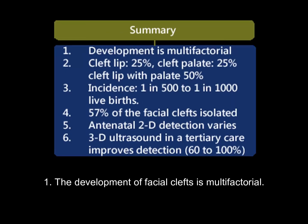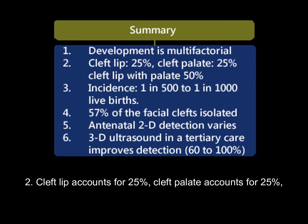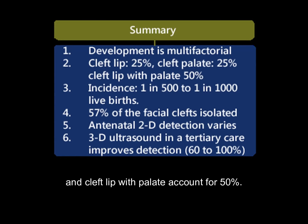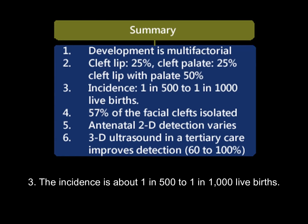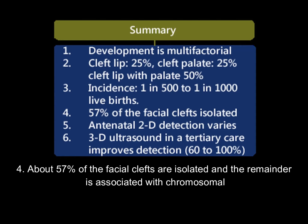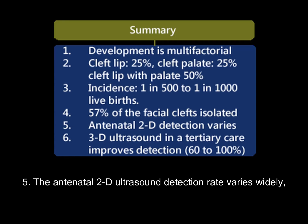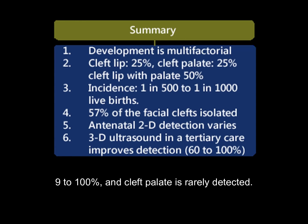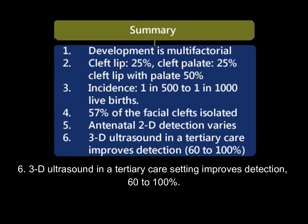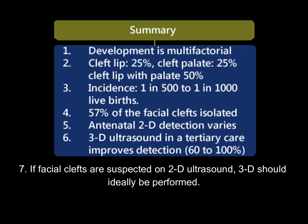To summarize: (1) The development of facial clefts is multifactorial. (2) Cleft lip accounts for 25%, cleft palate for 25%, and cleft lip with palate for 50%. (3) The incidence is about 1 in 500 to 1 in 1,000 live births. (4) About 57% of facial clefts are isolated; the remainder is associated with chromosomal aberrations 10%, syndromes or sequences 12%, and structural malformations only 21%. (5) The antenatal 2D ultrasound detection rate varies widely, 9 to 100%, and cleft palate is rarely detected. (6) 3D ultrasound in a tertiary care setting improves detection to 60 to 100%. (7) If facial clefts are suspected on 2D ultrasound, 3D should ideally be performed.